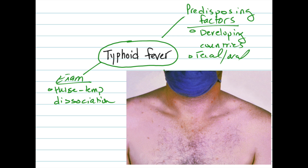Another key finding in typhoid fever is the presence of small, often truncal erythematous rash called a rose spot.